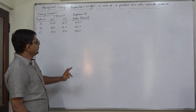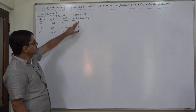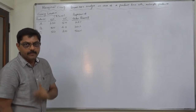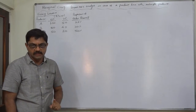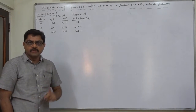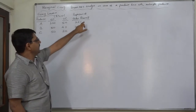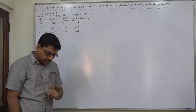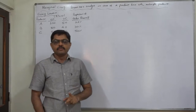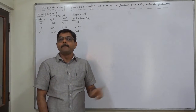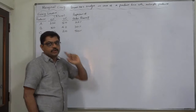First, check whether the proportion of sales in the question is given for sales quantity or sales value. If the percentage or proportion of sales quantity is available, then we should find out the weighted contribution per unit by multiplying the product-wise contribution per unit by the percentage or proportion of sales quantity. If the percentage or proportion of sales value is available, then we should find out the weighted PV ratio by multiplying the product-wise PV ratio by the percentage of sales value.